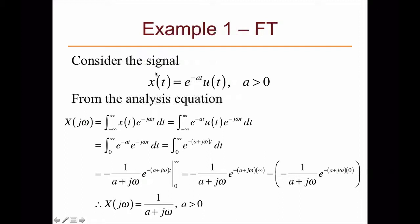Let's look at the first example. Suppose we have the signal X(t) = e^(-at)u(t), where a > 0. From the analysis equation, X(jω) equals the integral from minus infinity to infinity of X(t) multiplied by e^(-jωt) dt. Substituting X(t) = e^(-at)u(t), and since u(t) = 1 when t > 0, we can use u(t) to limit the integration limits. Since e^(-at) and e^(-jωt) can be combined into e^(-(a+jω)t).